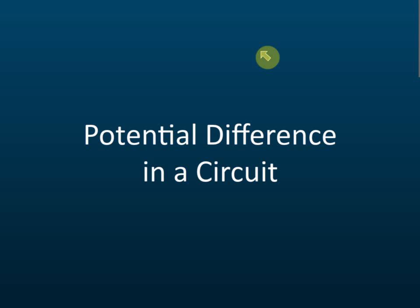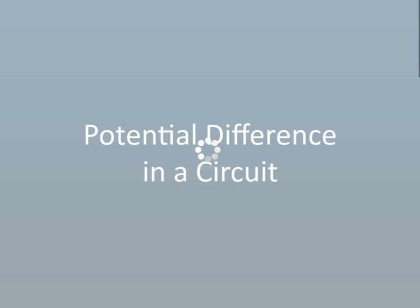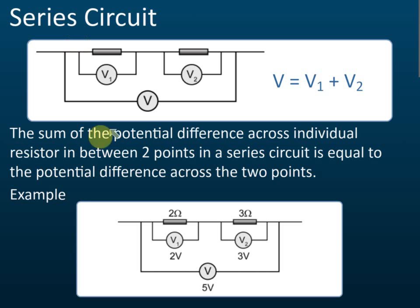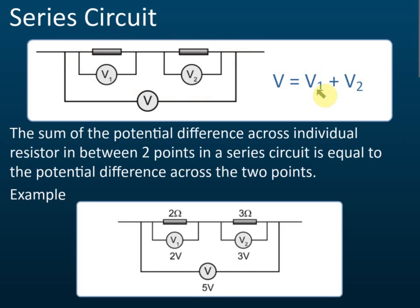Potential difference in the circuit. For a series circuit, the sum of the potential differences across individual resistors between two points is equal to the potential difference across those two points. For example, if the potential difference across the first resistor is V1 and across the second resistor is V2, then the total potential difference is V1 plus V2.